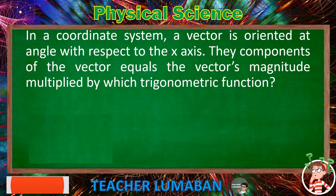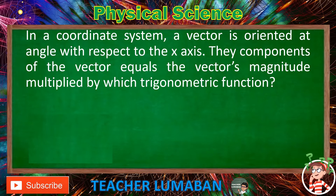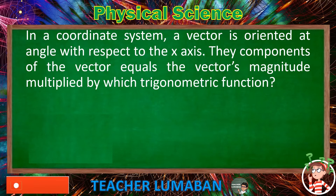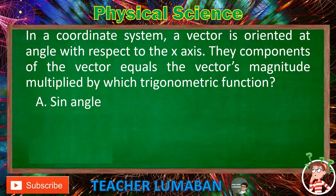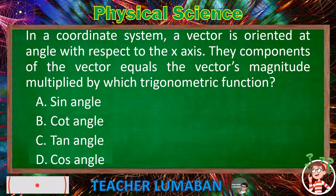In a coordinate system, a vector is oriented at an angle with respect to the x-axis. The components of the vector equals the vector's magnitude multiplied by which trigonometric function? Letter A: sin θ. Letter B: cot θ. Letter C: tan θ. Letter D: cos θ.